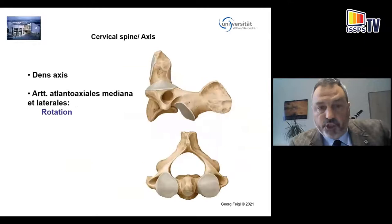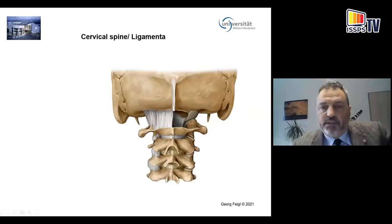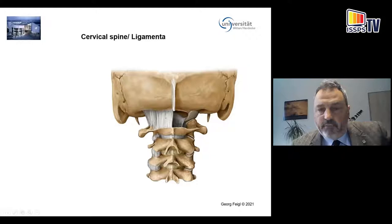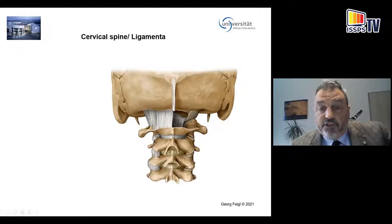When you go to the ligamentous parts, you see the nuchal ligament taken away, and then you see the posterior atlantooccipital membrane and also the ligamentum flavum, and the capsule of the zygapophysial joints. You see this small groove — which Shankar already mentioned — where the spine and the dorsal branch will pass by, dividing into the different branches: the medial and lateral branch.